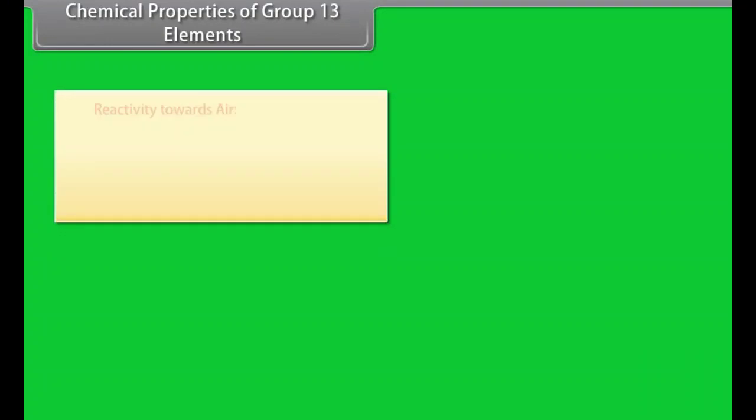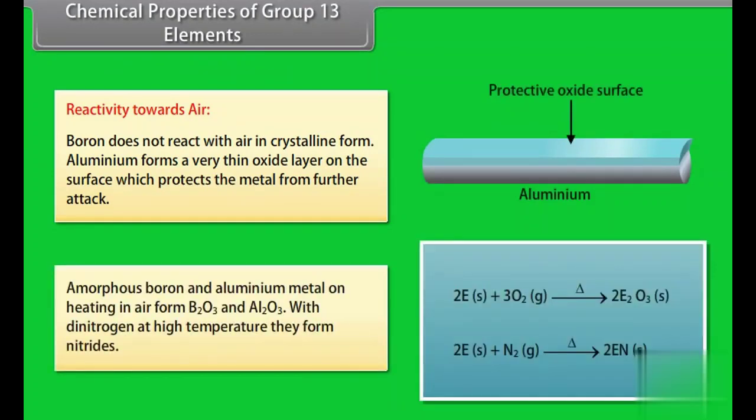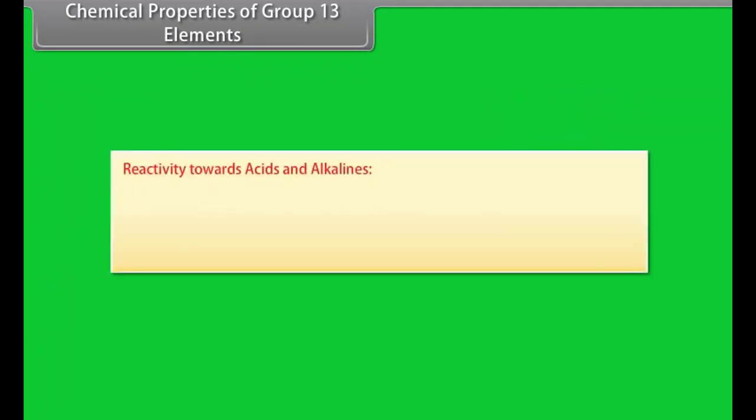Chemical properties of group 13 elements. Reactivity towards air. Boron does not react with air in crystalline form. Aluminium forms a very thin oxide layer on the surface which protects the metal from the further attack. Amorphous boron and aluminium metal on heating in air form B2O3 and Al2O3. With dinitrogen at high temperature they form nitrites.